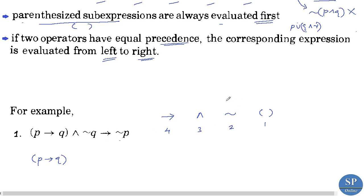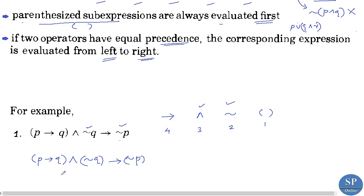So we first evaluate the bracket: p implies q. Then we perform the negations — negation-q and negation-p — going left to right since they have equal precedence. Next we perform the conjunction, and finally the implication, giving us the fully evaluated expression.